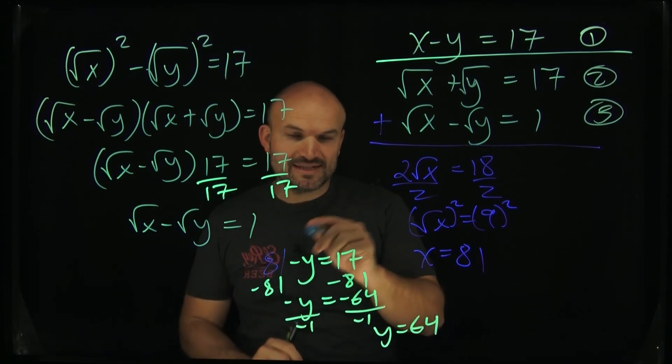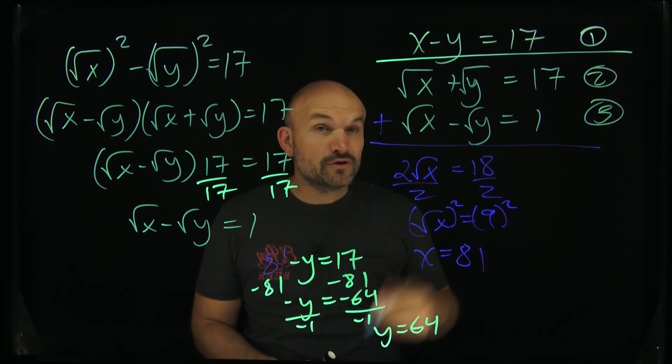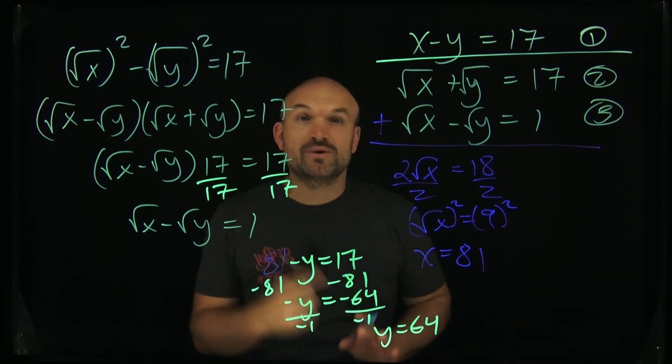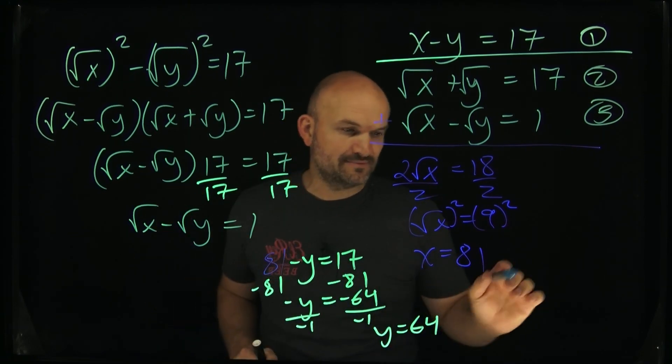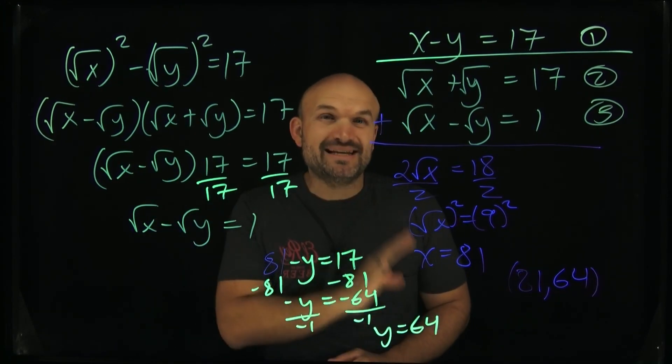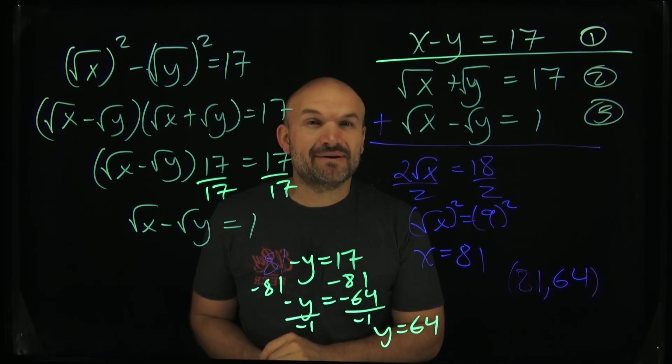When I plugged in 81 for x and solved for y, I get positive 64. So the solution to this equation is when x equals 81, y equals 64, which I can now write as a coordinate point (81, 64). The only reason we're able to solve a problem like this is because we got to the basics. If you like this video and want to check out more, then check out the next video I have for you here.